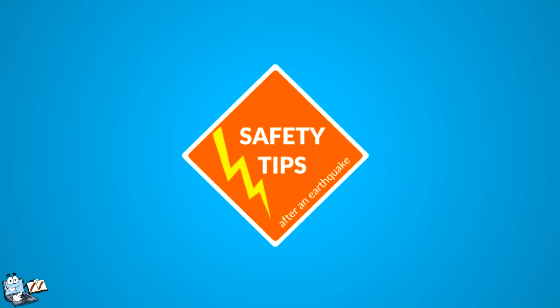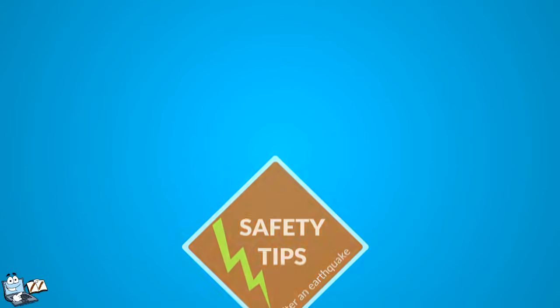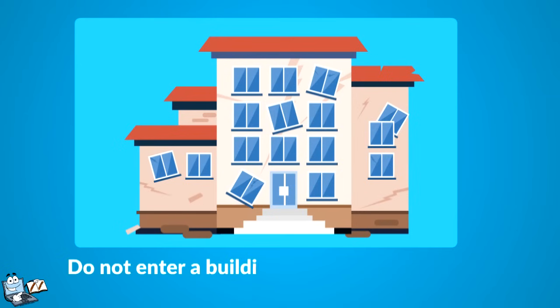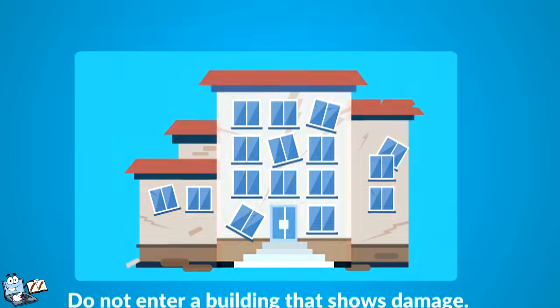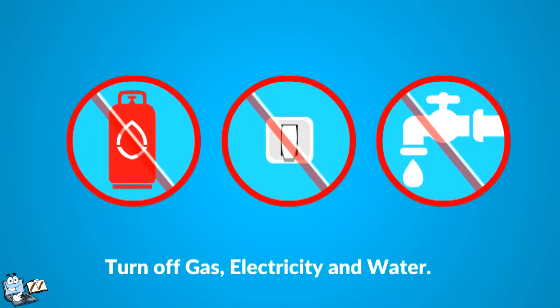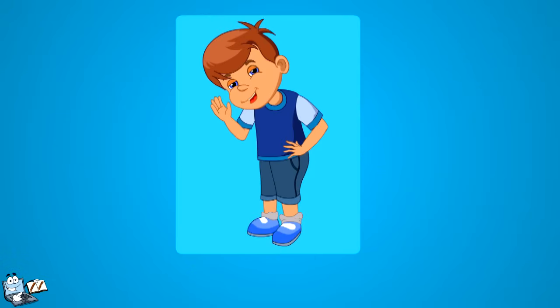Here are some safety tips after an earthquake. Be prepared for aftershocks. Do not enter a building that shows damage. Turn off gas, electricity and water. Do not spread rumors.